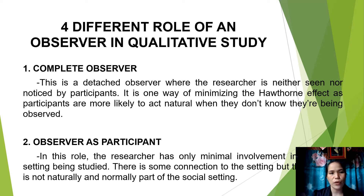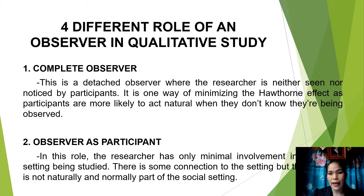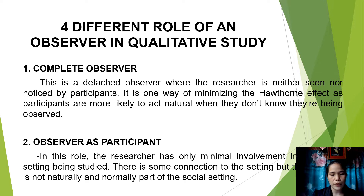There are four different roles of an observer in a qualitative study. One is the complete observer. This is a detached observer where the researcher is neither seen nor noticed by the participants. It is one way of minimizing the Hawthorne effect, as participants are more likely to act natural when they do not know they are being observed. The researcher observes the activities of a group without in any way participating in those activities. The subjects may or may not realize they are being observed.